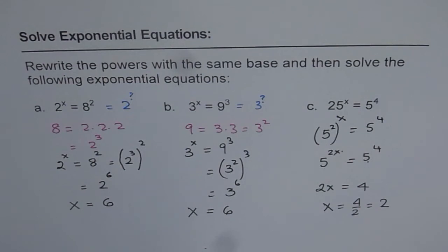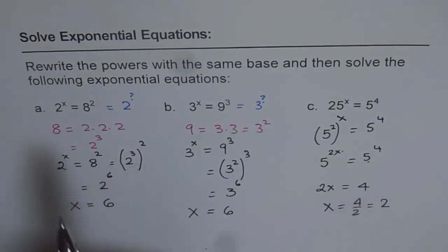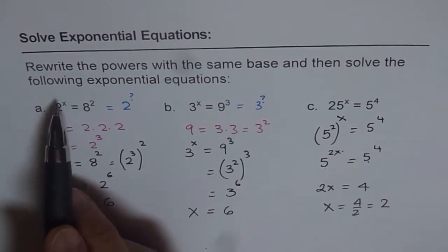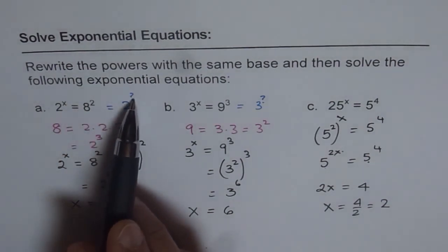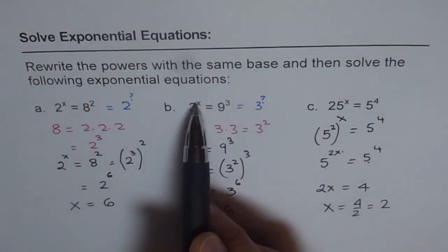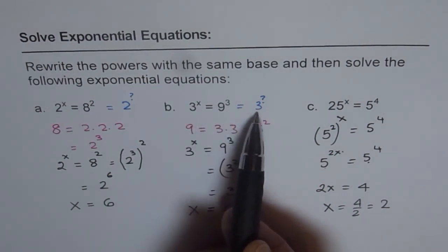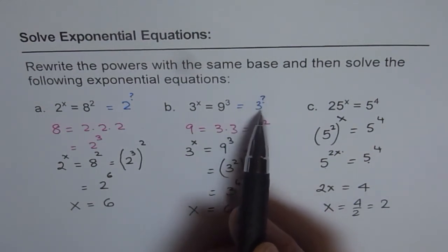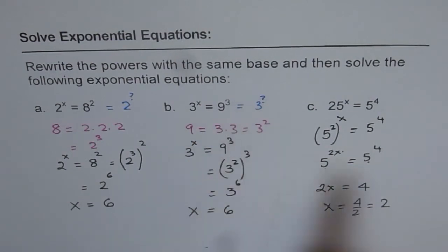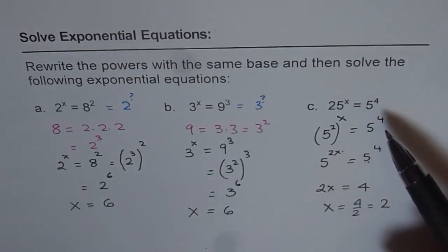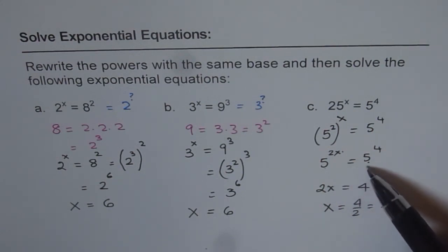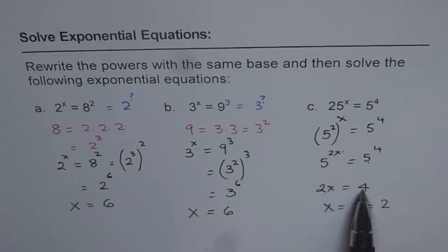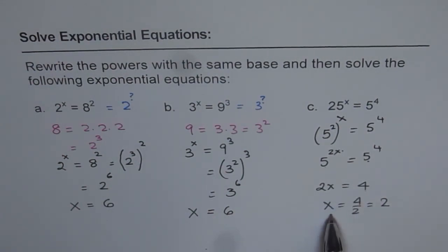That is how you can solve all the exponential equations. Let's go through them once again. For example 1: we had 2 to the power of x equals to 8 square. We wrote 8 as 2 to the power of 3, so 3 times 2 is 6, giving us 2 to the power of 6 equals 2 to the power of x, so x equals 6. For example 2: 3 to the power of x equals to 9 cube. Since 9 is 3 square, we wrote 3 to the power of 6, so x equals 6. For example 3: 25 was written as 5 square, giving 5 to the power of 2x equals 5 to the power of 4. Since the base is the same, 2x equals 4, so x equals 2.